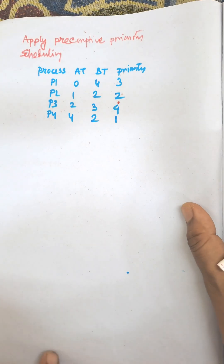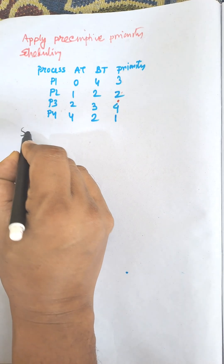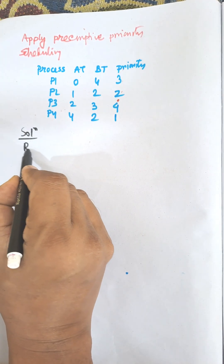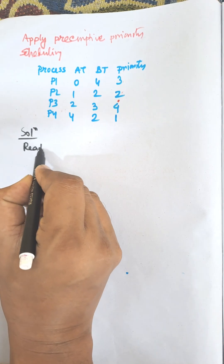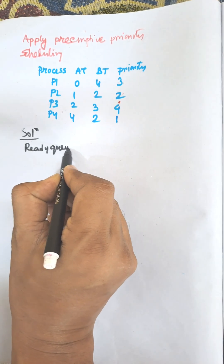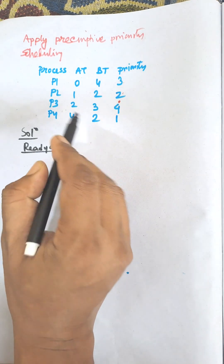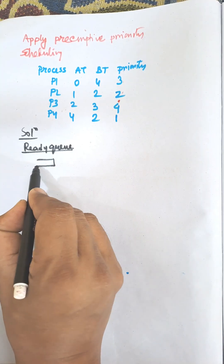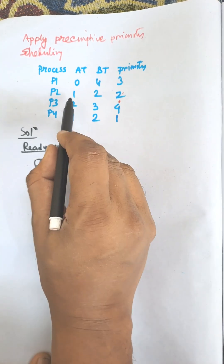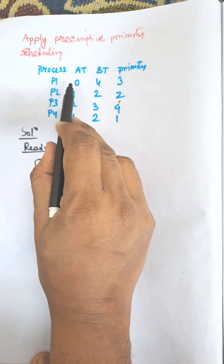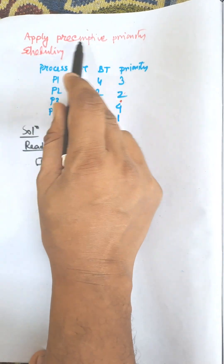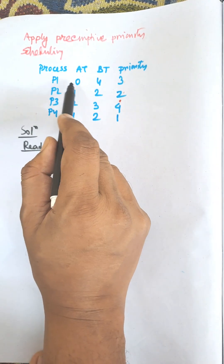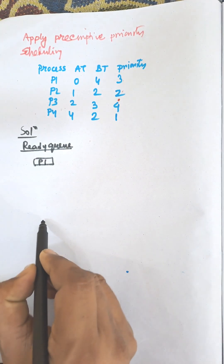Hi everybody. In this video I am going to draw the Gantt chart for preemptive priority scheduling algorithm. Here we need to draw the ready queue first. The ready queue is based on arrival time. The first process P1 arrives, and P1 will be selected for execution, as it is preemptive priority scheduling.